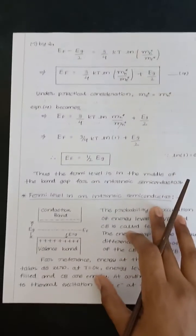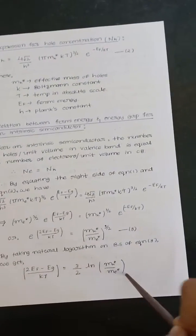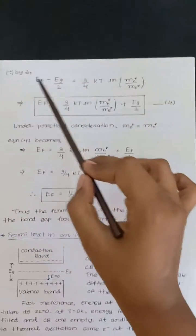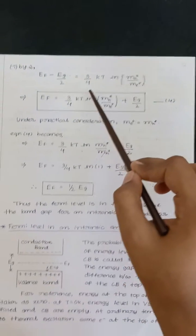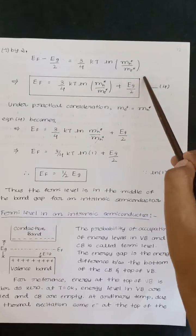Next divide by 2 on both sides of this equation. So you will get (EF minus EG)/2 equals 3/4 KT ln of MH star divided by Me star.